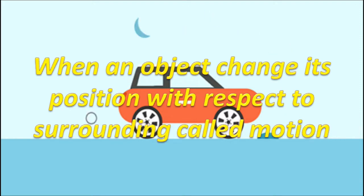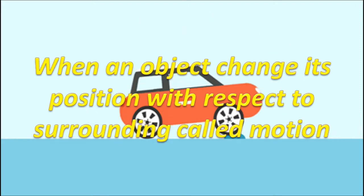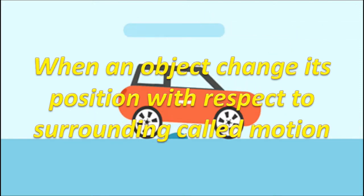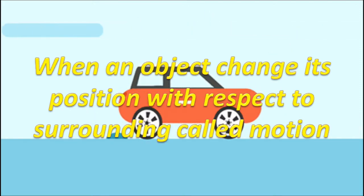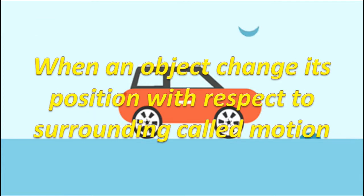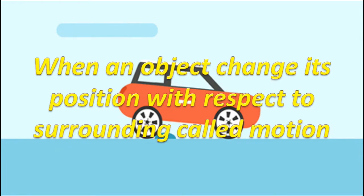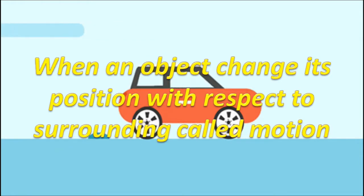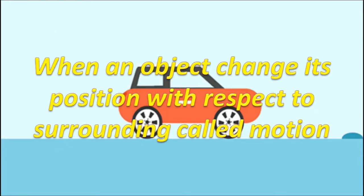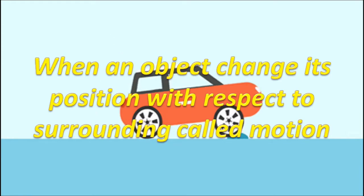When an object changes its position with respect to its surroundings, it is called in motion. For example, a moving car on the road changes its position with respect to milestones and trees alongside the road.